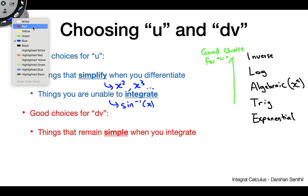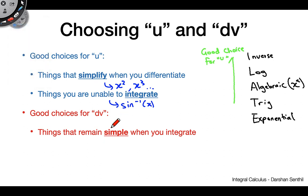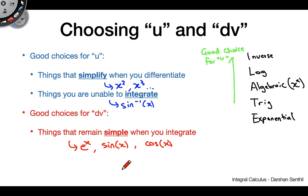For choices for dv, you want to pick things that remain simple when you integrate them. We talked about three telltale characters: e to the x, sine of x, and cosine of x. These three work very nicely as a choice for dv because no matter how many integrals you take of them, they don't get much more complicated. Be mindful of the sign when taking integrals of sine and cosine due to the alternating sign.